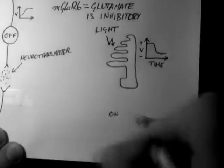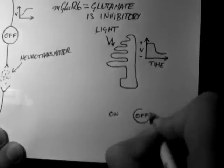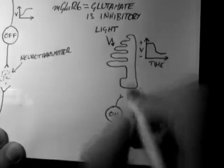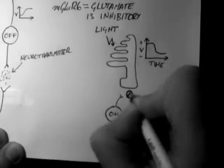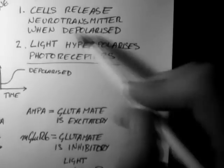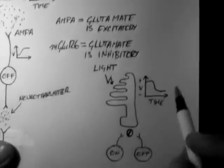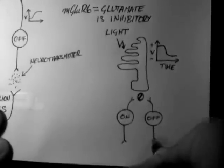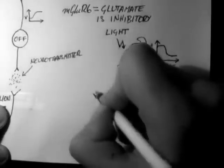Now I'm drawing out two bipolar cells. And according to rule number one, which is cells release neurotransmitter when depolarized, it follows that a hyperpolarized cell won't release any transmitter. So there's no neurotransmitter released from here.